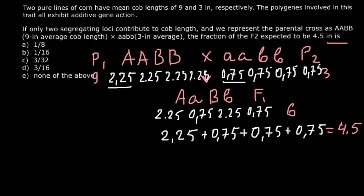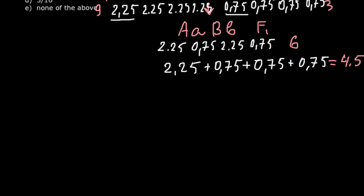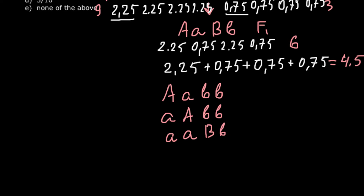Now we need to find how many combinations give us 1 dominant allele and 3 recessive alleles. Combination 1: capital A, small a, small b, small b. Combination 2: small a, small a, capital B, small b — wait, that is small a, small a, and capital B... let me list: combination 2 is small a, small a, small b, small b with one dominant. Combination 3 is small a, small a, capital B, small b. Combination 4 completes the set. All four combinations have one dominant allele and three recessive alleles.